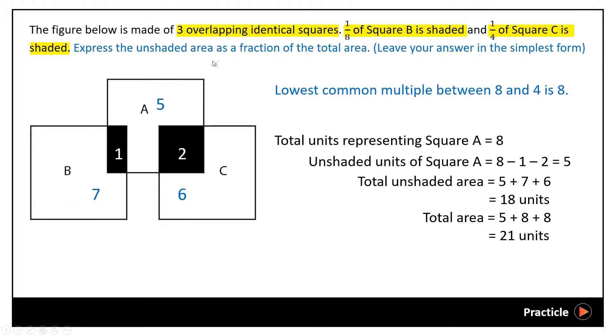So now we can express the unshaded part as a fraction of the total area. We will have 18 over 21, and since we have a common factor, which is 3, we can divide 18 by 3 to get 6, and 21 by 3 to get 7. And 6 over 7 would be our answer.